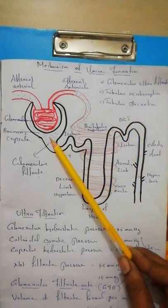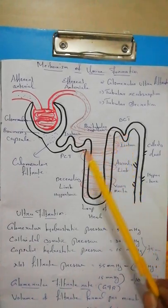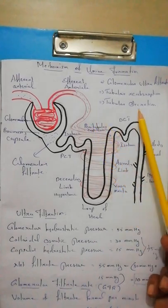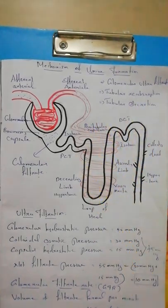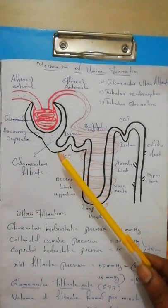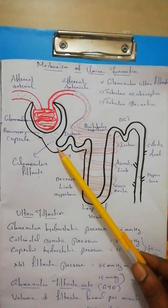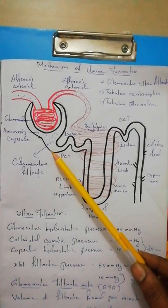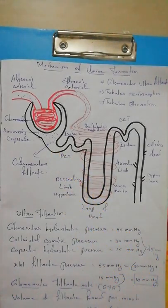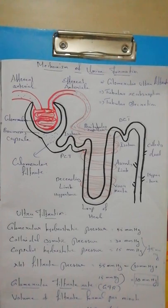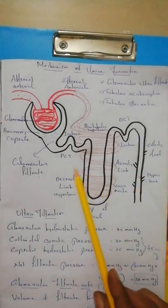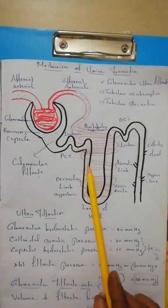Tubular reabsorption takes place along the long tubule connected to the Bowman's capsule. The glomerular filtrate contains both necessary substances (high threshold substances) and waste. Substances like glucose, lactate, amino acids, sodium, and water — which are necessary to the body — are reabsorbed from the tubule back into the surrounding tissue. This is called reabsorption because the substances were already absorbed once in the small intestine during digestion.